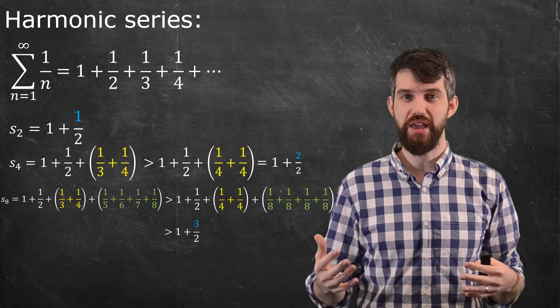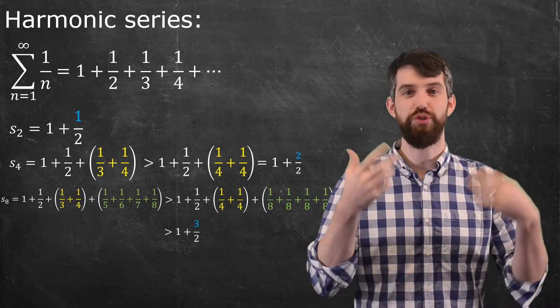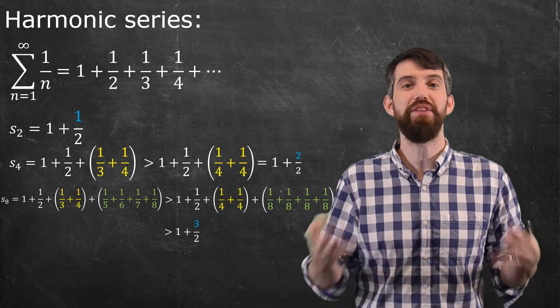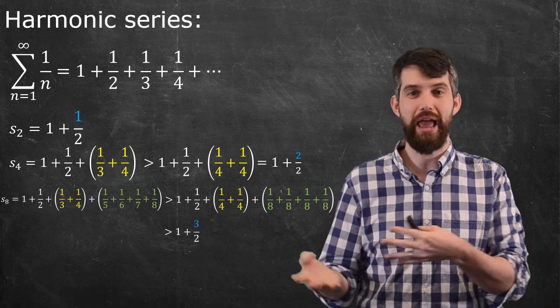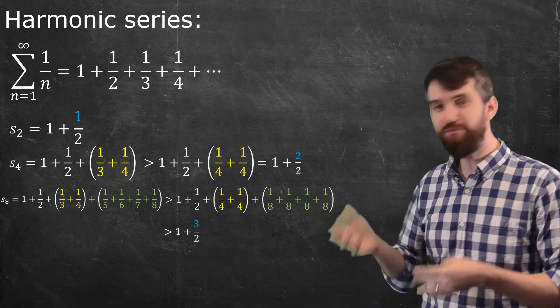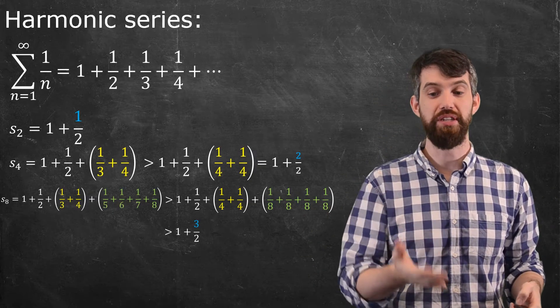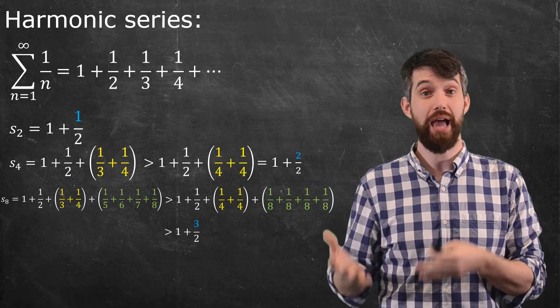And then in much the same way that the quarter plus the quarter added up to a half, four copies of an eighth also adds up to one-half. So I have one plus a half plus a half plus a half, which is three halves. So indeed we have one plus three halves.